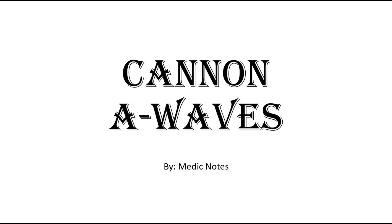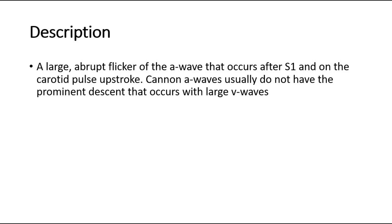Welcome back to another video of Medic Notes. This video is on Canon A waves. Canon A waves is a large, abrupt flicker of the A wave that occurs after the first heart sound and on the carotid pulse upstroke. Canon A waves usually do not have the prominent descent that occurs with large V waves.